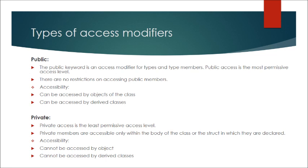The second type is Private. Private access is the least permissive access level. Private members are accessible only within the body of the class or the struct in which they are declared. In terms of accessibility, private members cannot be accessed by object, and cannot be accessed by derived classes.